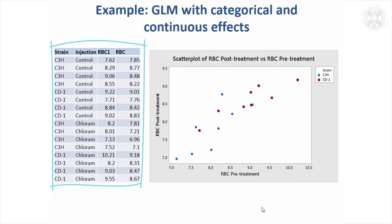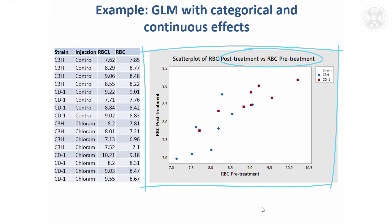Looking at this example, we were examining different strains of mice and the effect of injection on red blood cell count taken after either a sham or active injection. But before the study started, red blood cell count was also measured before the injection was given. If we plot red blood cell count before treatment against red blood cell count after treatment, mice with a tendency for high values before treatment also had a tendency for high values after treatment.